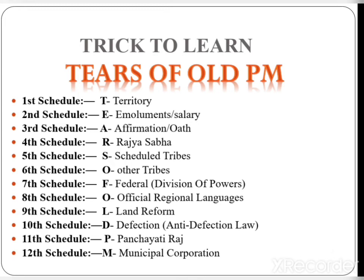The trick to learn all 12 schedules is the phrase: 'Tears of Old PM.' Schedule 1 — T for Territory; Schedule 2 — E for Emoluments and salaries; Schedule 3 — A for Affirmation and oath; Schedule 4 — R for Rajya Sabha; Schedule 5 — S for Scheduled tribes; Schedule 6 — O for Other tribes; Schedule 7 — F for Federal division of power; Schedule 8 — O for Official languages; Schedule 9 — L for Land reform; Schedule 10 — D for Defection.